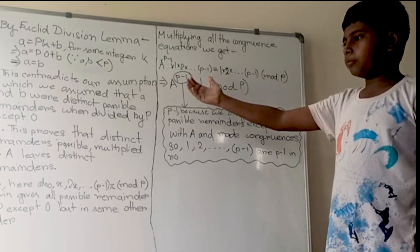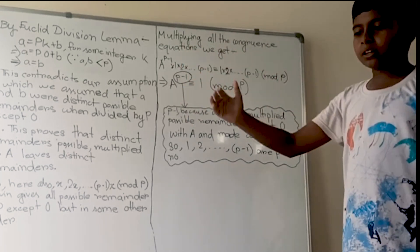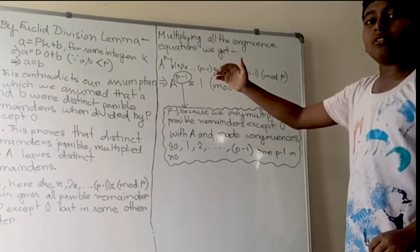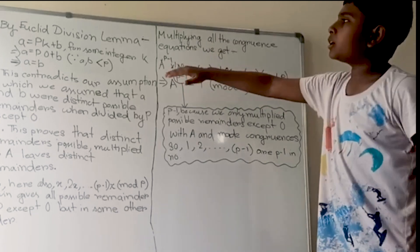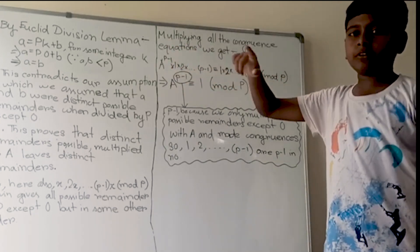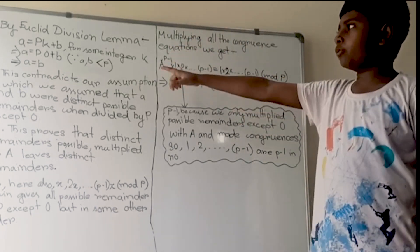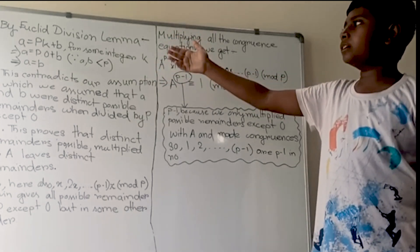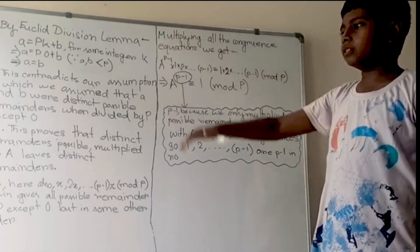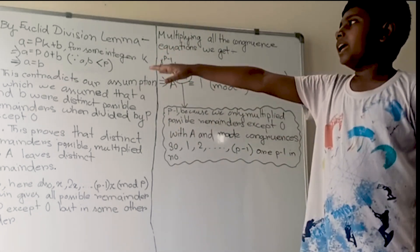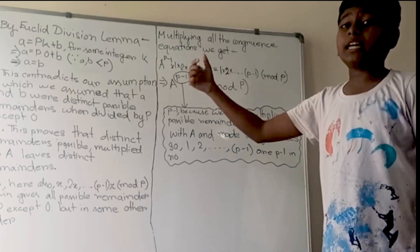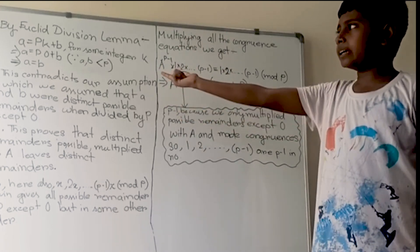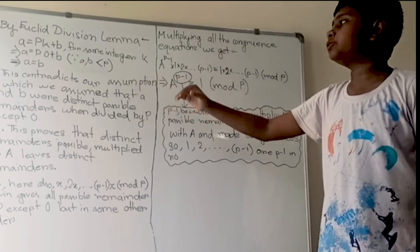Continuing from the previous part — since a and b are both smaller than p, by Euclid's Division Lemma we can write a = p·k + b. Since both a and b are smaller than p, k must equal 0, giving us a = b.